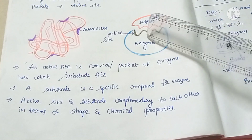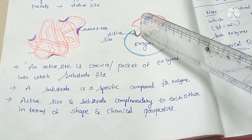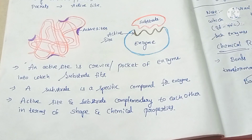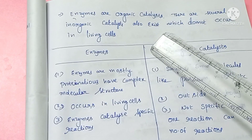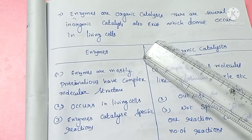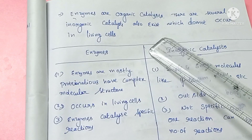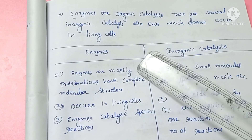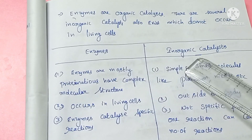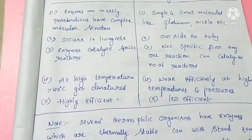The enzyme and substrate are complementary to each other in terms of shape and chemical properties. Enzymes are organic catalysts — they are produced within living cells, unlike inorganic catalysts which work outside the body.